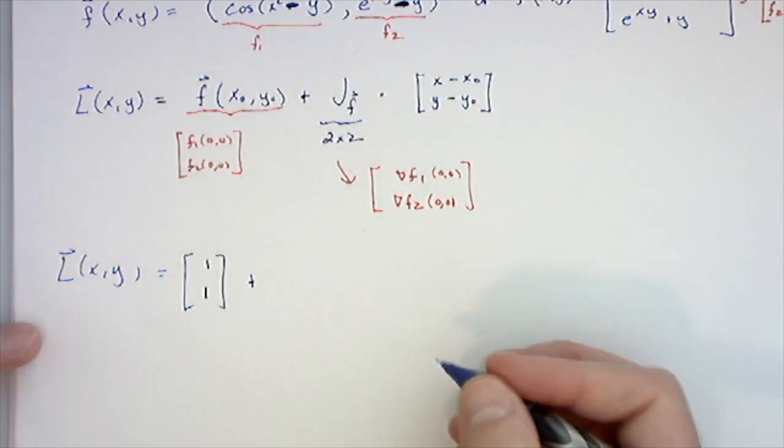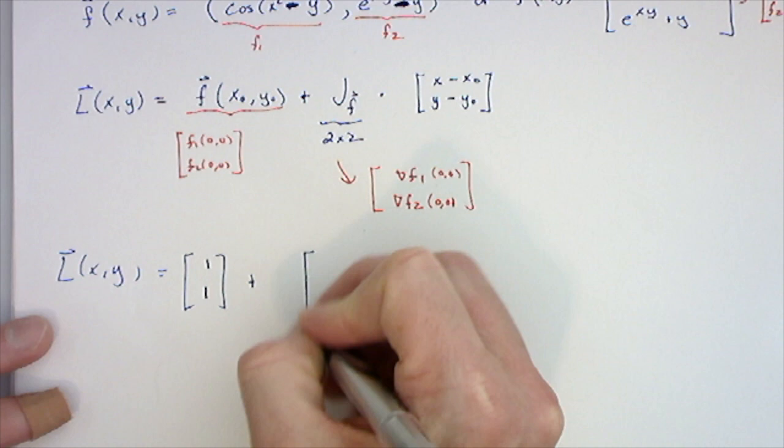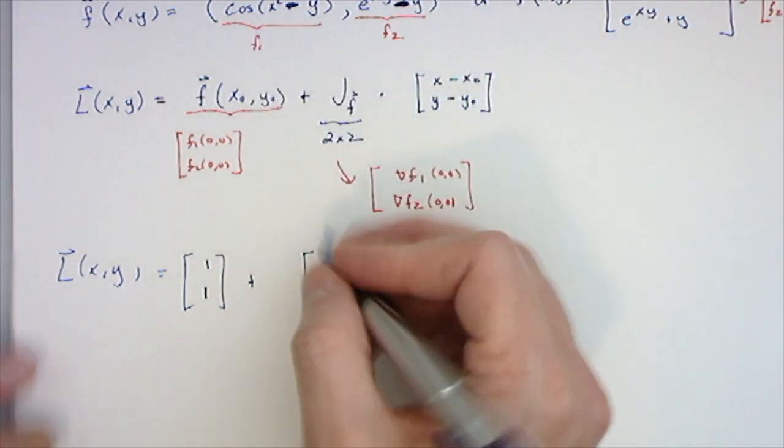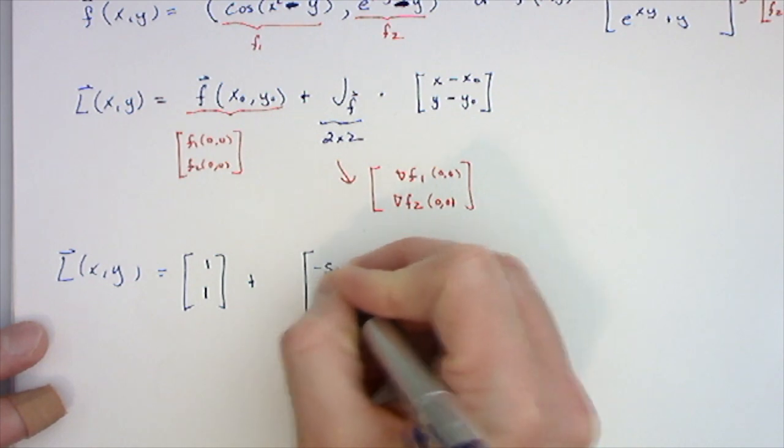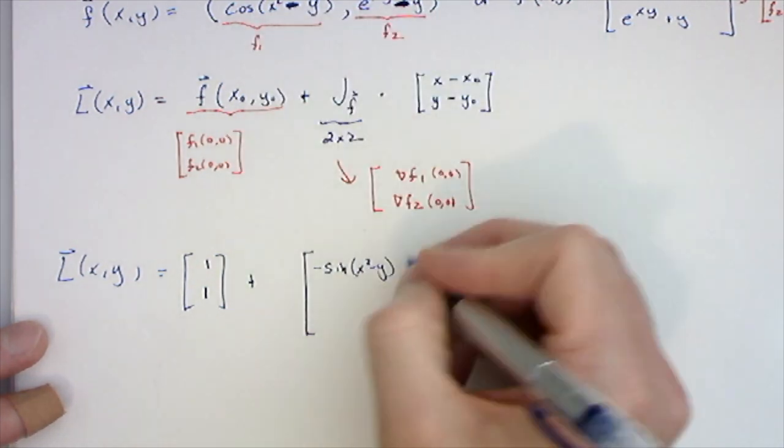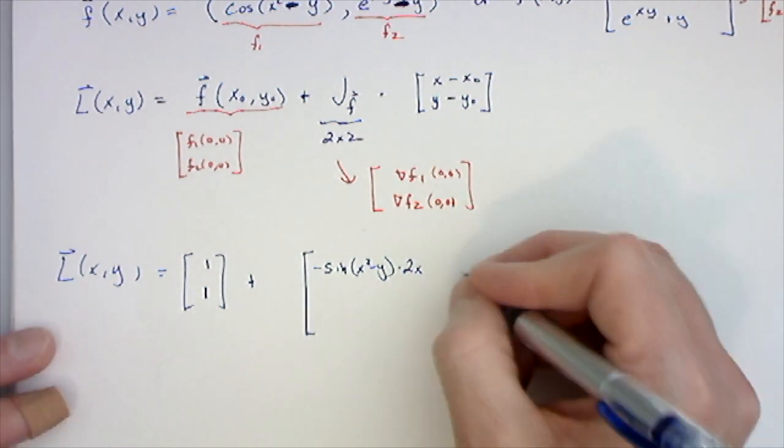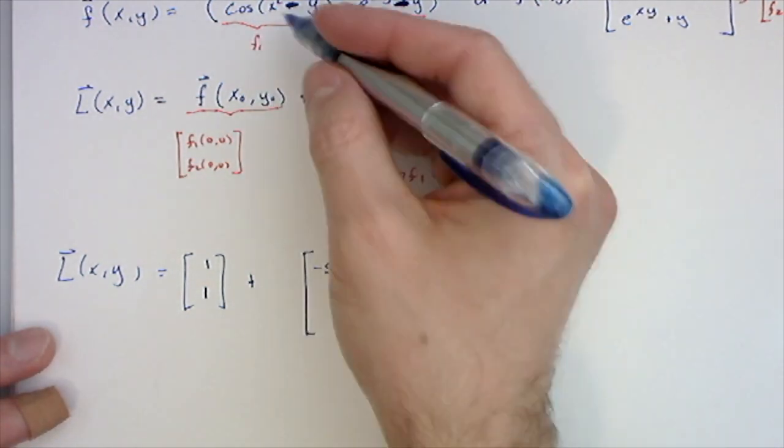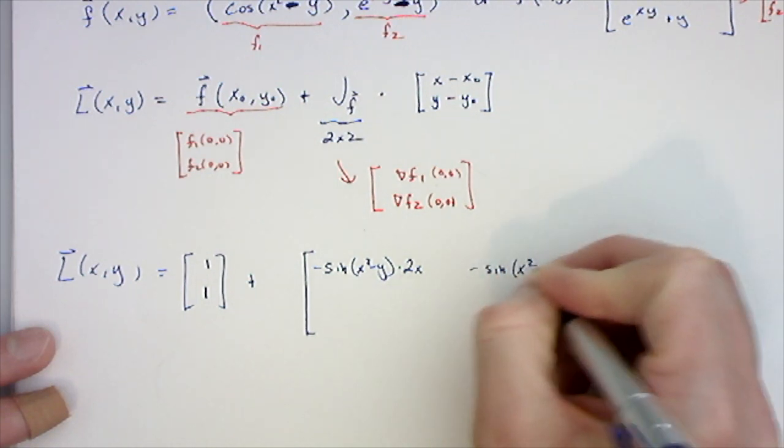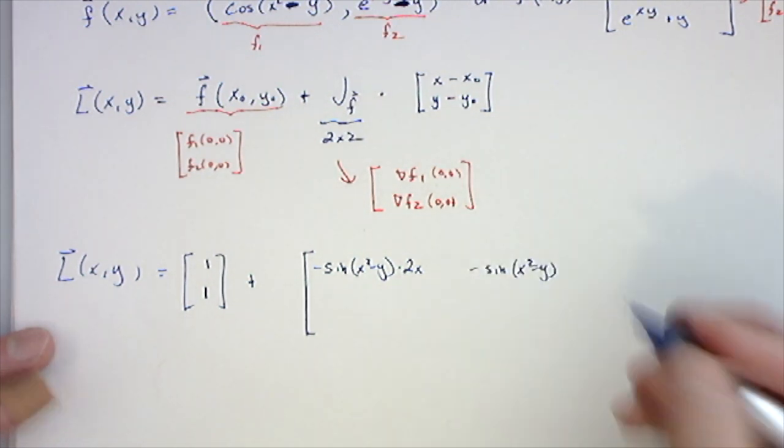The Jacobian is a 2×2 matrix of partials. The partial of the first function with respect to x is -sin(x² - y) times the derivative of x² - y, which is 2x. The next entry is the derivative with respect to y, so it's -sin(x² - y) times the derivative of x² - y with respect to y, which is -1.